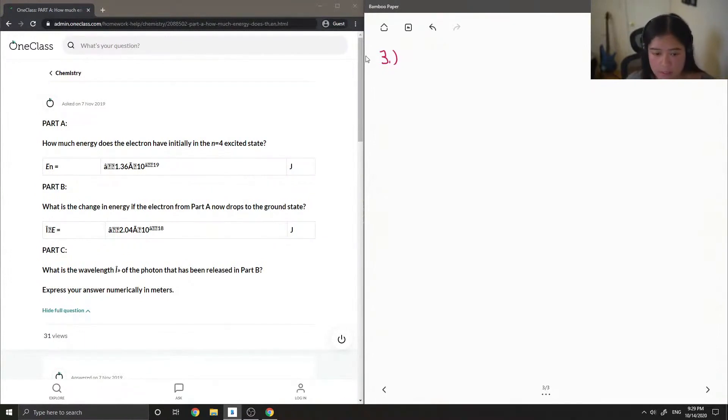So it looks like this person answered it already, but I'm still going to go over the question just to see how they got this answer. So I'm assuming this is 1.36 times 10 to the negative 19. Part B asks,